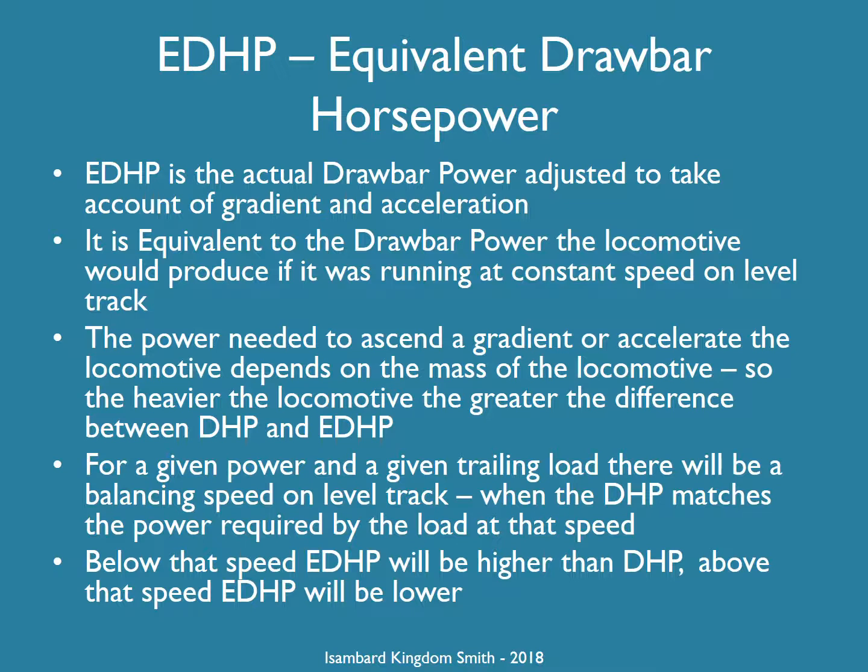The power required by the trailing load increases with speed, so at lower speeds the locomotive will be accelerating and EDHP will be greater than DHP. At higher speeds, EDHP can be less than DHP, either because the locomotive is going downhill or because it's decelerating.